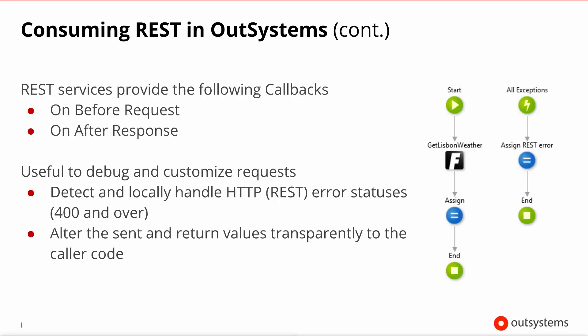Another great feature that REST in the OutSystems platform provides beyond SOAP is the ability to write callback functions. You can trap the before-request and after-response of any call to a REST method. You will normally use these callbacks to, for example, prepare the request before it goes out, or to adjust any return values so that they arrive at your application in a more controlled format.